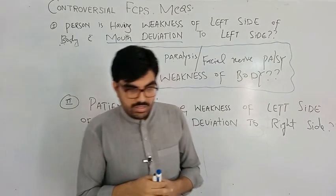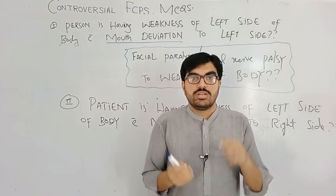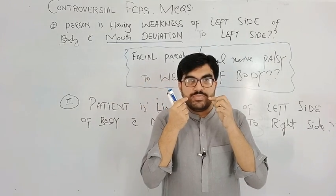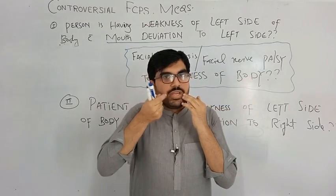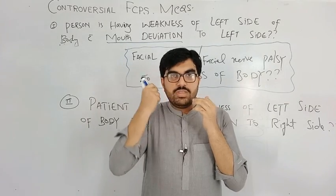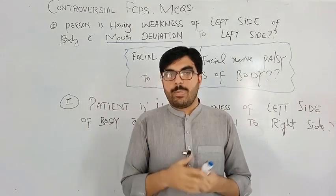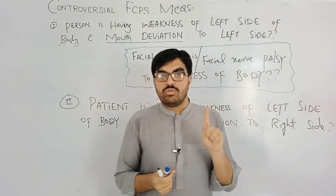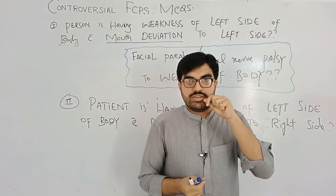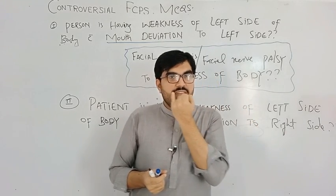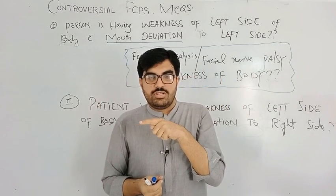Now there is another commonly repeated MCQ causing confusion — mouth deviation in facial nerve palsy. Normally the mouth is centered because one side's effect is neutralized by the other. When one facial nerve is paralyzed, the healthy side pulls the mouth toward itself. Therefore, the paralyzed side is opposite to the direction of mouth deviation.